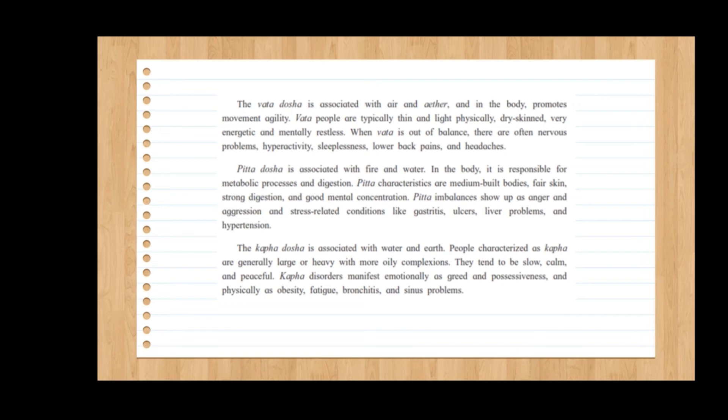In the last paragraph, they discuss Kapha dosha. Kapha dosha is associated with water and earth. People characterized as Kapha are generally large or heavy with more oily complexions. They tend to be slow, calm, and peaceful. Kapha disorders manifest emotionally as greed and possessiveness, and physically as obesity, fatigue, bronchitis, and sinus problems.